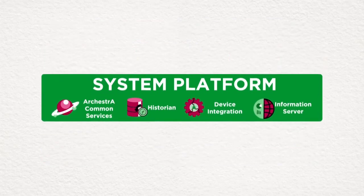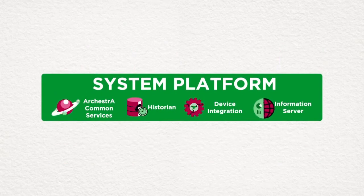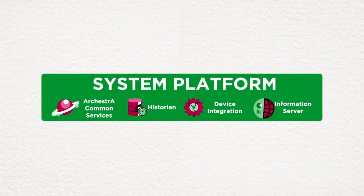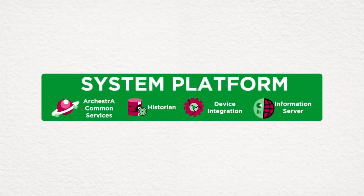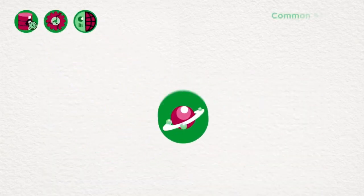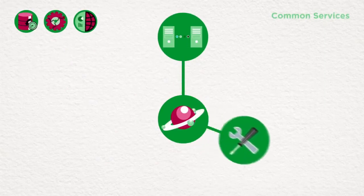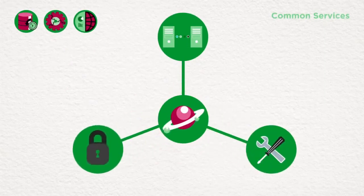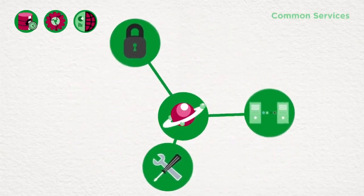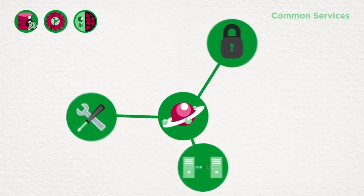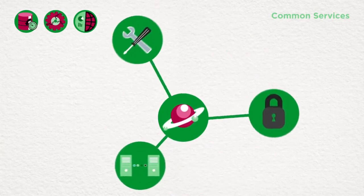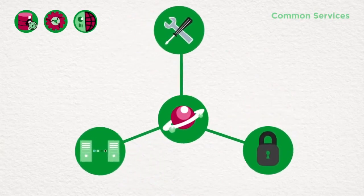The four core components — Common Services, Process Historian, Device Integration, and Information Server — create the foundation of Wonderware System Platform. Common Services provide multi-level redundancy, reusable engineering, and security, all based upon Wonderware's Orkestra technology.